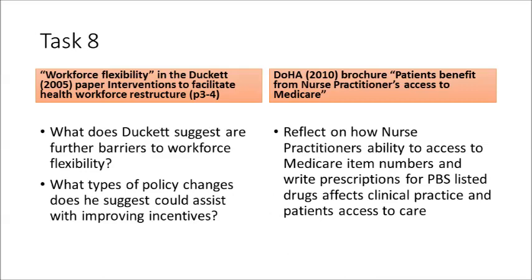Task 8 is your final task for Part 3. Read the section titled Workforce Flexibility in the Ducat paper — that is the Ducat paper Interventions to Facilitate Health Workforce Restructure, not the Ducat textbook — and answer: What does Ducat suggest are further barriers to workforce flexibility, and what types of policy changes does he suggest could assist with improving incentives? After that, read the DOHA brochure Patients Benefit from Nurse Practitioner's Access to Medicare, and reflect on how nurse practitioners' ability to access Medicare item numbers and write prescriptions for Pharmaceutical Benefits Scheme listed drugs affects clinical practice and patient access to care.